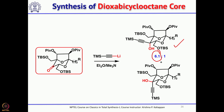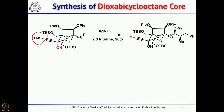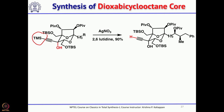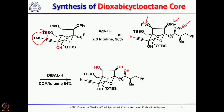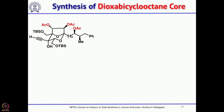The TMS group on the triple bond is removed with silver nitrate, then DIBAL reduction cleaves the three pivalate esters to give a triol. Treatment with acetic anhydride and DMAP gives the triacetate. The TBS group that is less hindered is then selectively removed using dichloroacetic acid, giving the primary alcohol alongside the triple bond.